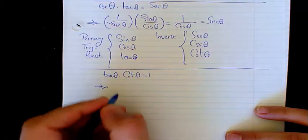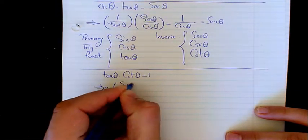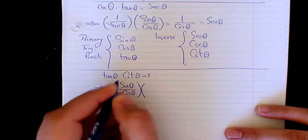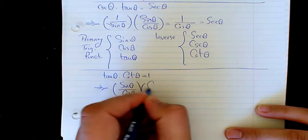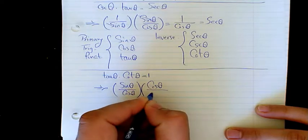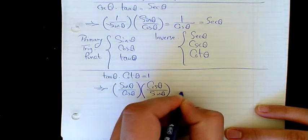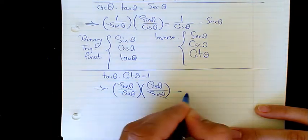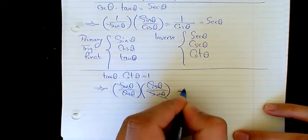As you know, tan theta is equal to sine theta divided by cosine theta. Cotan theta is equal to cosine theta divided by sine theta. So cosine and cosine cancel out, sine and sine cancel out too, so the answer will be equal to 1.